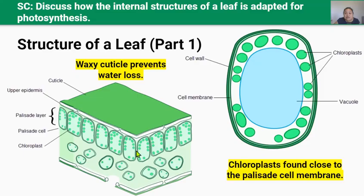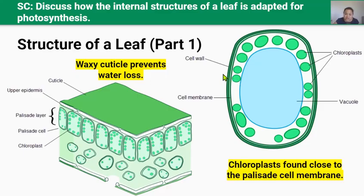In these palisade cells there is a high density of chloroplasts that are pushed up against the cell membrane. They're pushed there by the large vacuole that takes up most of the inside of the cell. This puts the chloroplasts in close proximity with the cell membrane, reducing the diffusion distance of carbon dioxide going into the chloroplast and oxygen going out into the extracellular space. This makes diffusion more effective and so makes photosynthesis more effective.